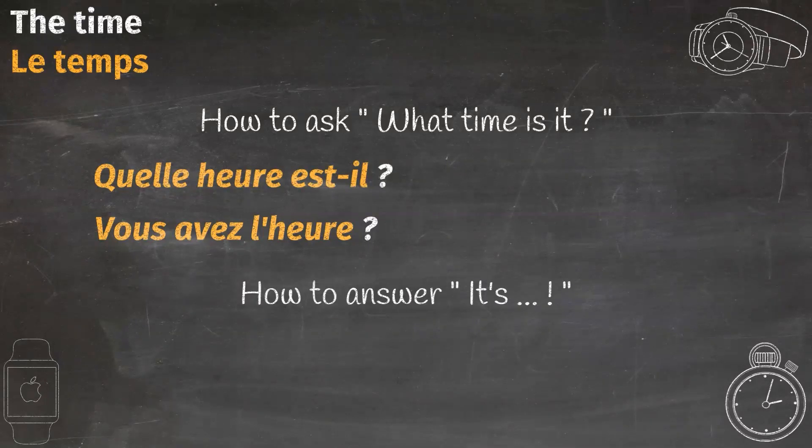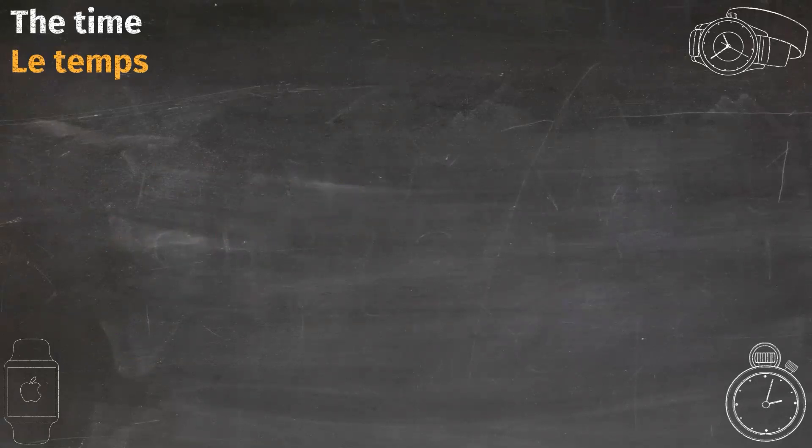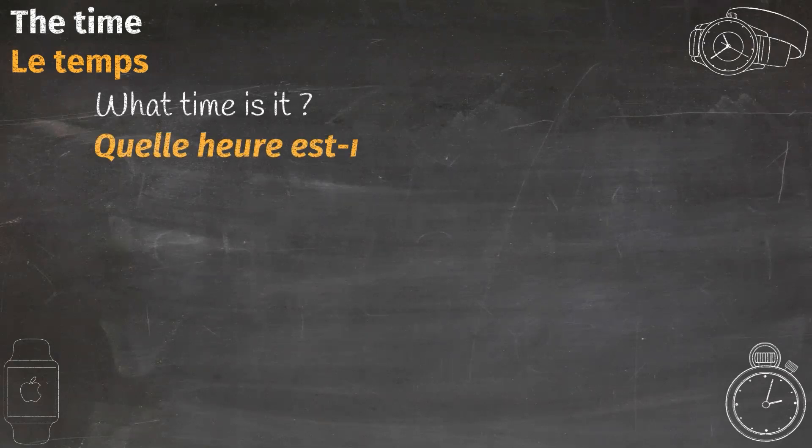It is very simple. In English, we would say, it's plus the time, obviously. In French, we would say, Il est. Together, il est plus the time. Now let's dig in and learn how to say the time precisely in French language.